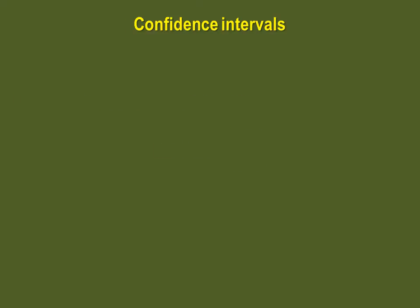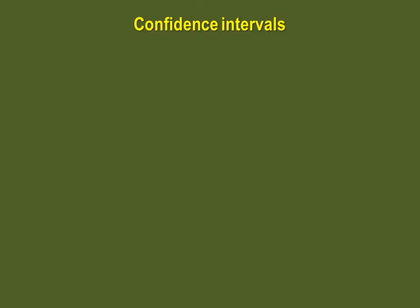Confidence intervals can be used in two ways. First, we can determine an interval from the population mean within which sample means will be. So with this equation, we can say that 95% of sample means will fall within 1.96 standard errors of the population mean.